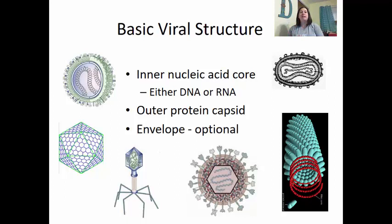This inner core is going to be protected by an outer protein capsid. These capsids can have different shapes — they can be very complex, spherical, or a rod. Some of these viruses also have an envelope. The envelope is optional, but it does offer protection for the virus. Just like an envelope does for your letters, it makes it hard to see what's inside. This envelope helps the virus hide from your immune system.